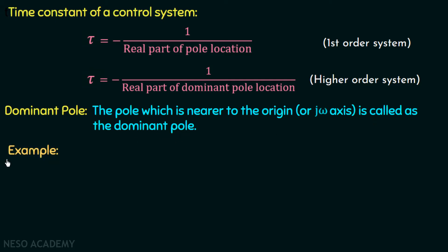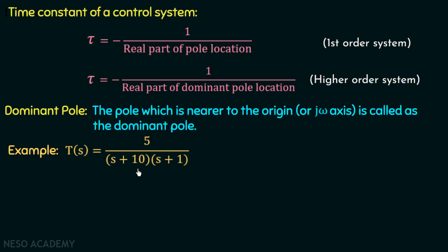Let's understand this with the help of an example. Suppose T(s) is a transfer function equal to 5 over (s+10)(s+1). This transfer function has two poles — it is a second order transfer function. Now which is the dominant pole? The pole nearer to the origin is the dominant pole. We have one pole at s = -10 and the other at s = -1. Clearly the pole at s = -1 is nearer to the origin and hence this is the dominant pole.